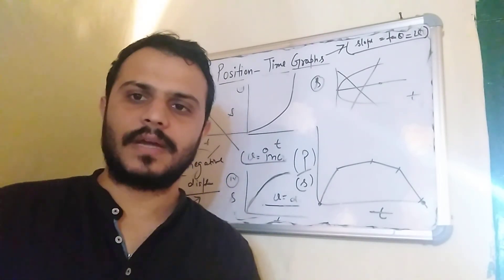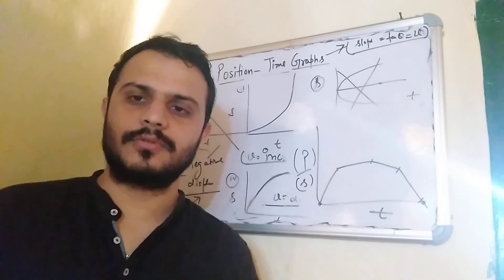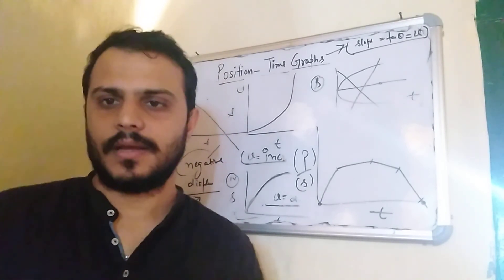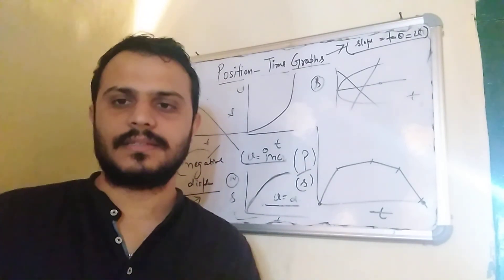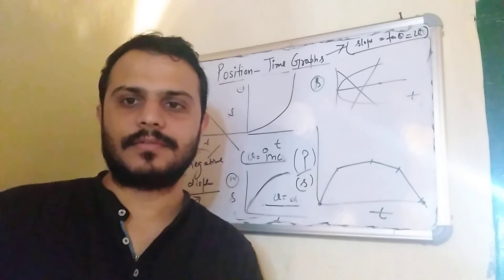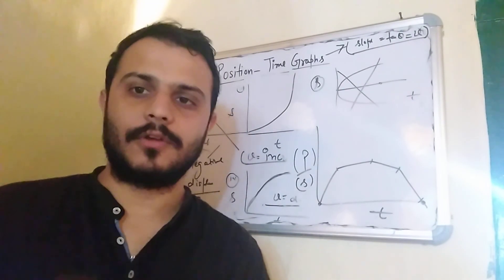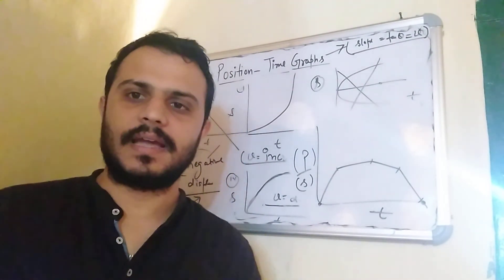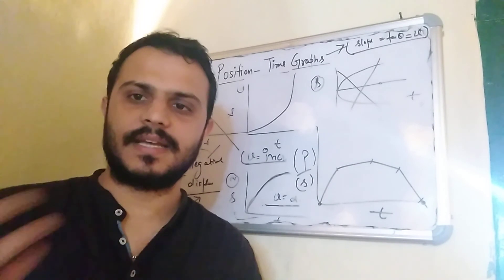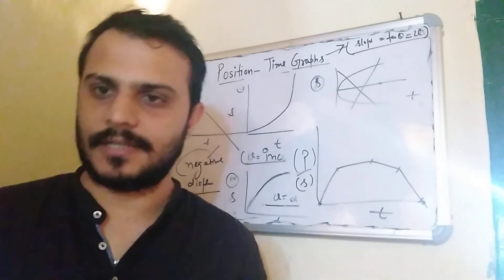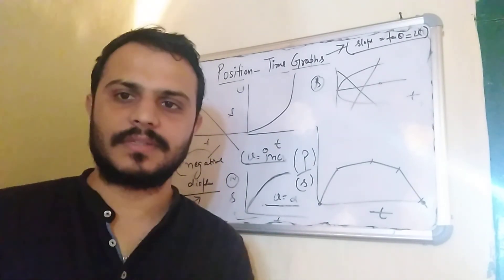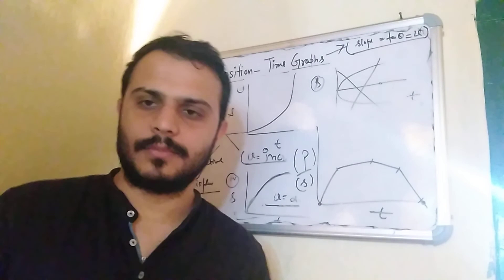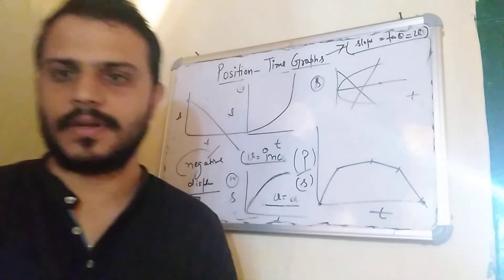I hope you have understood the meaning of these position-time graphs and their importance. These position-time graphs give you the velocity — their slope gives you the velocity and you can also check from tan(theta). Thank you very much.